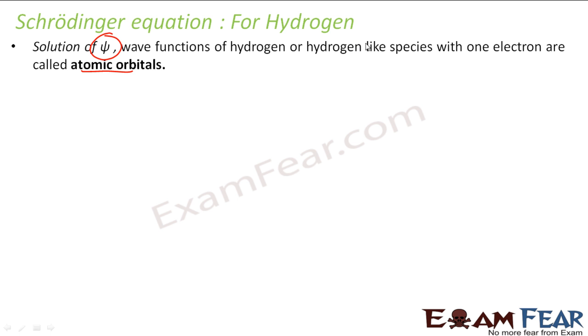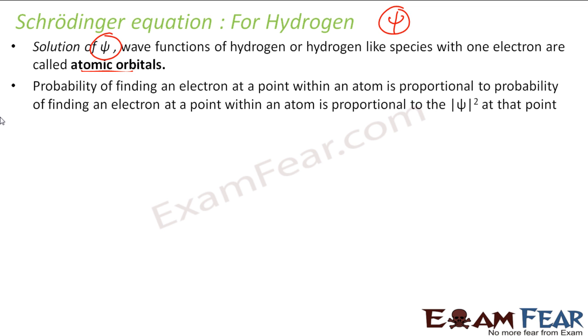We will discuss what atomic orbital is. So the wave function of this gives nothing but atomic orbitals where the probability of finding electrons is generally 99.5%. And the probability of finding electron at a point within an atom is proportional to psi squared at this point.